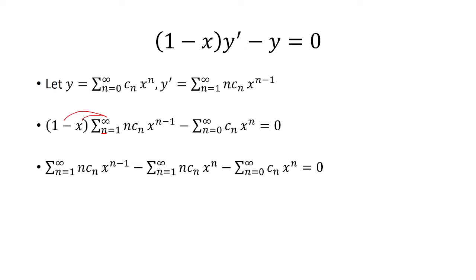Now, there's a little issue because I have n=0 here, n=1, n=1. I want all these to be the same. And the other thing is, I want the exponents to be x^n.